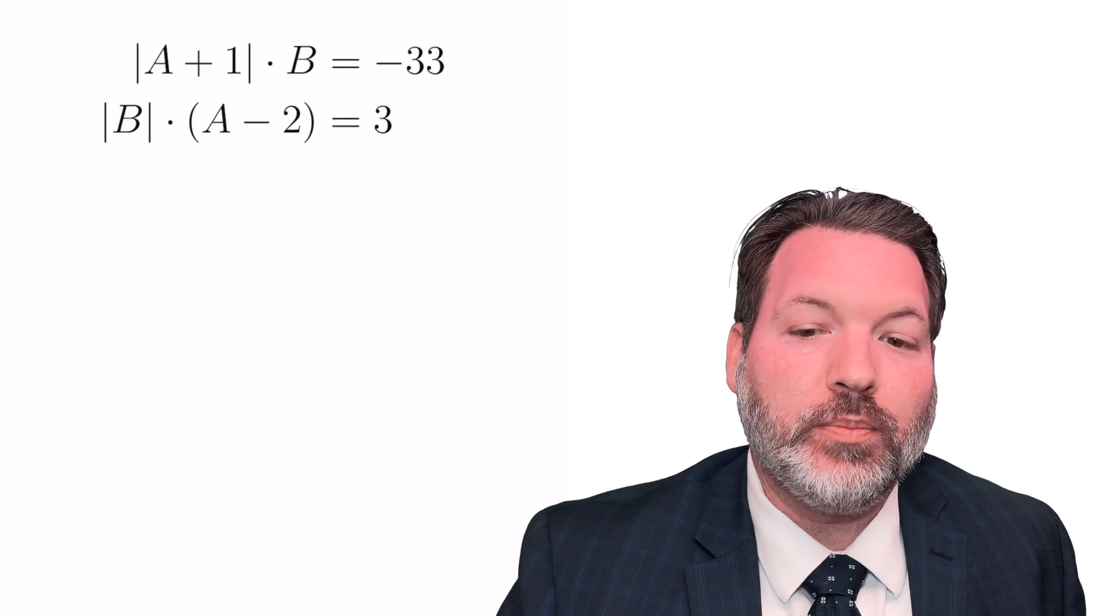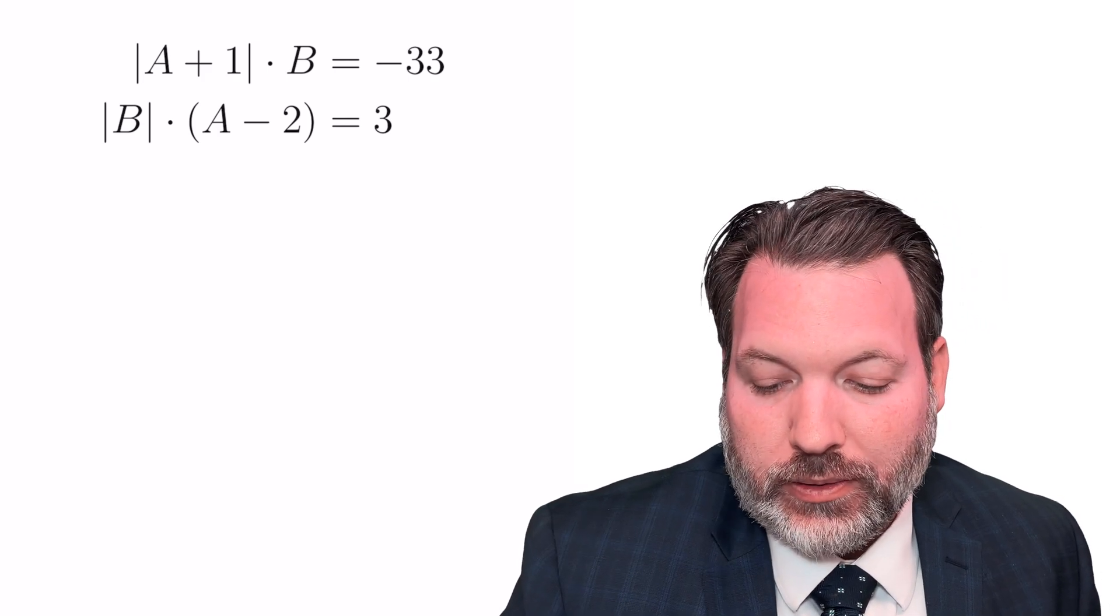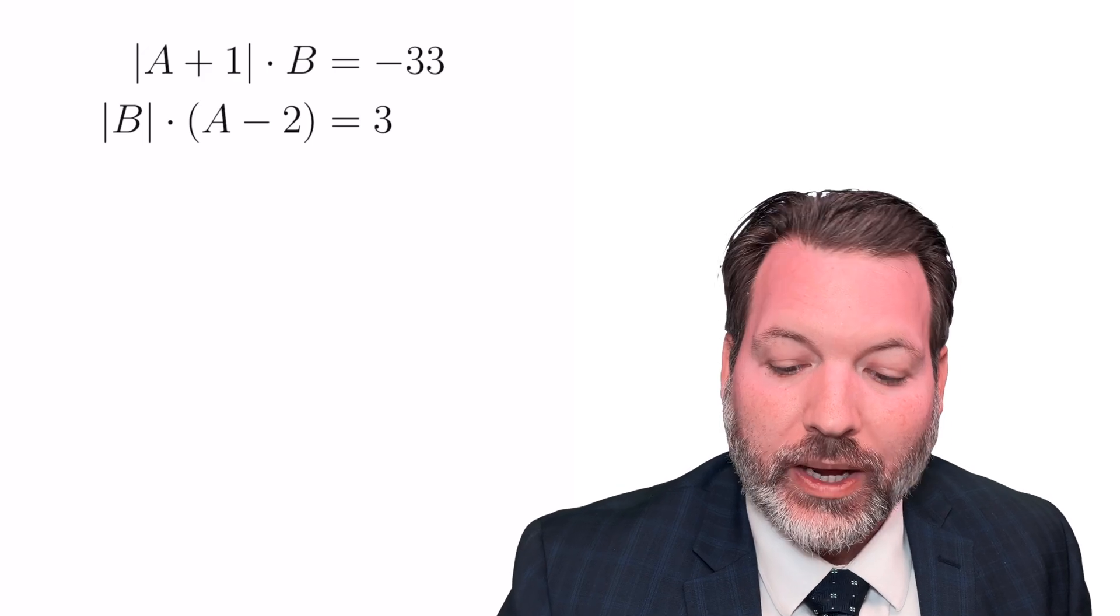The absolute value of a plus 1 times b is equal to negative 33. For sure, I don't know what a and b are in this instance. I could start taking some guesses, but they would just be guesses.